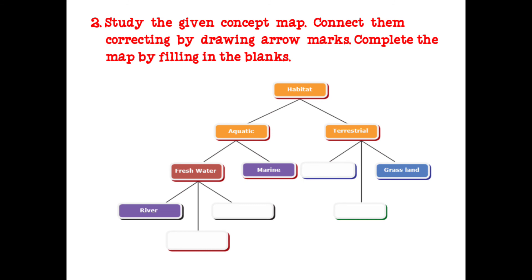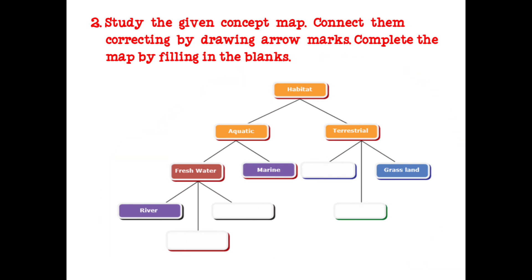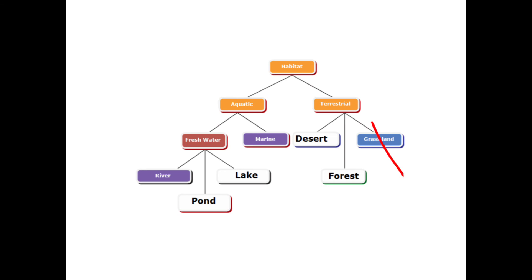Next question: Study the given concept map, connect them correctly by drawing arrow marks, and complete the map by filling in the blanks. Terrestrial habitat has three types: grassland, forest, and desert. Aquatic habitat is divided into freshwater and marine. Freshwater is further divided into river, lake, and pond.